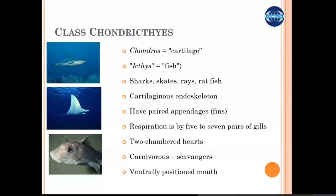These two types of fish are classified into two different classes. The first is class Chondrichthyes — the cartilaginous fishes. The name suggests that 'chondro' means cartilage and 'ichthys' means fish, so you can get the definition of the class from its name.